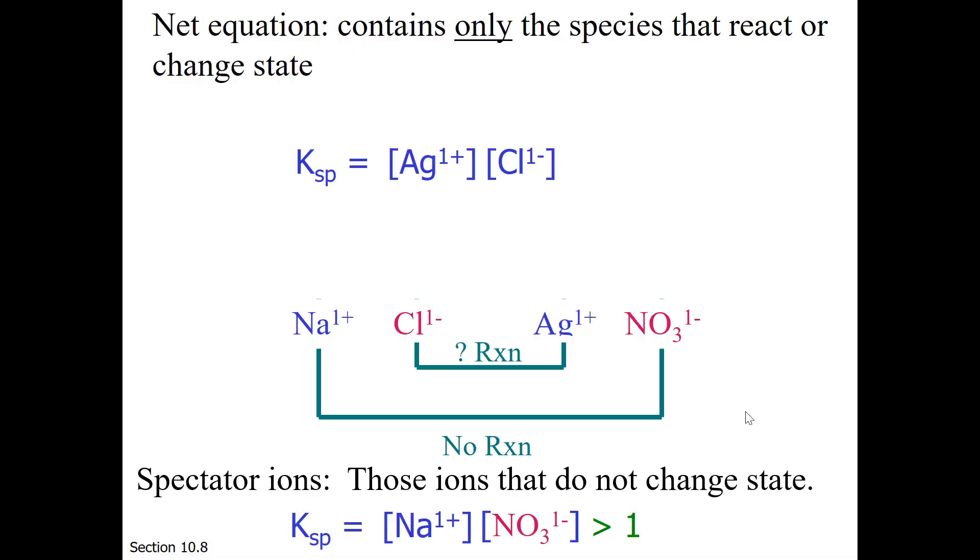So the Ksp of silver chloride is approximately 10 to the minus 10. This is much, much less than 1. So a reaction will occur between silver cation and chloride anion. We can write that reaction as aqueous silver cation plus aqueous chloride anion form silver chloride solid, the neutral ionic compound.